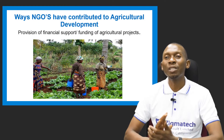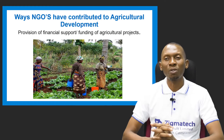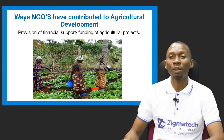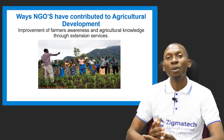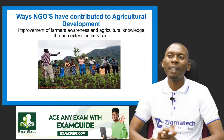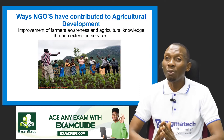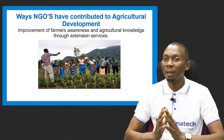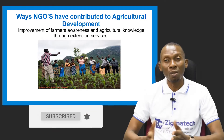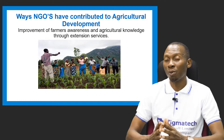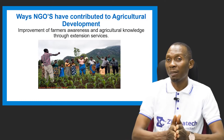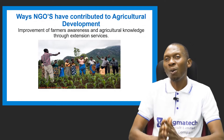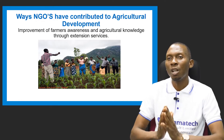They also help to provide financial support for agricultural projects. Remember, agriculture is capital intensive, and so these NGOs help to provide financial support for agricultural projects. They also help to improve farmers' awareness and agricultural knowledge, and this is achieved through extension services. NGOs are also involved in providing good extension services to farmers.